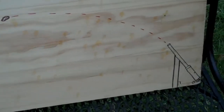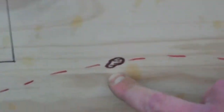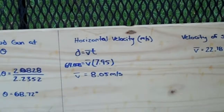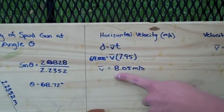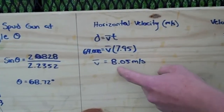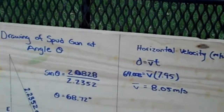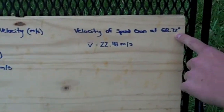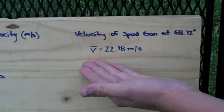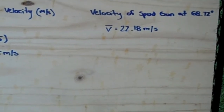We drew a picture of our trajectory showing the potato's path. Using the angles and average time and distances, we found that distance equals VT, giving us an average horizontal velocity of 8.05 meters per second. Using that in the triangle with 68.72 degrees, we were able to find the average velocity of our cannon, which is 22.18 meters per second.